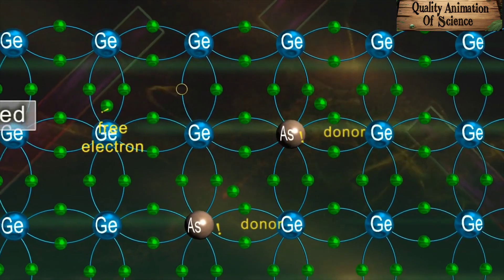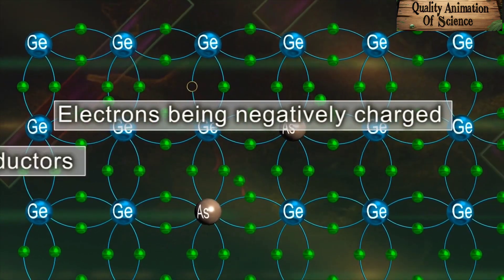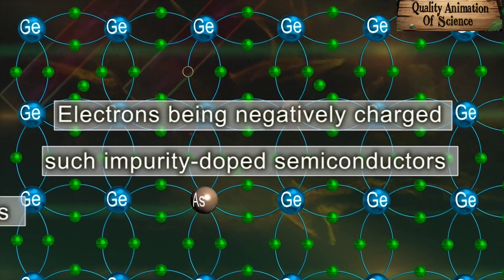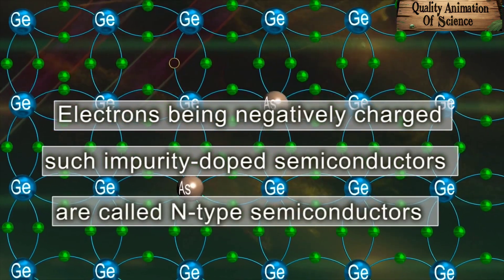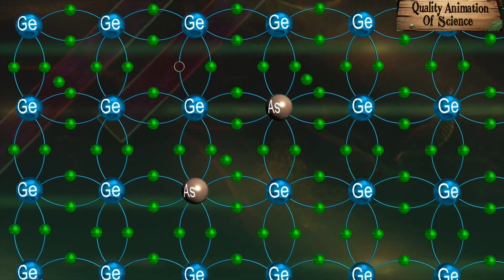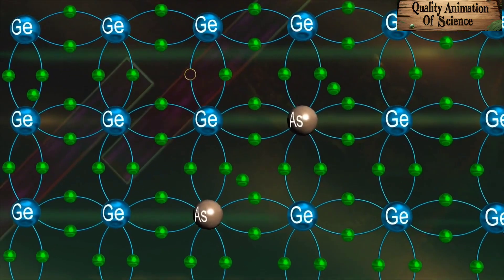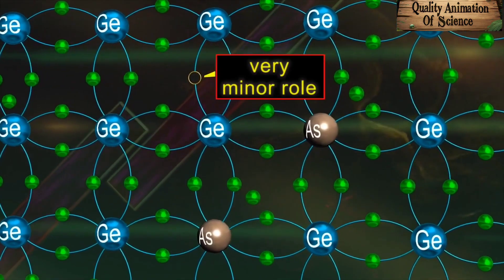The electrons being negatively charged, such impurity-doped semiconductors are called N-type semiconductors. In such semiconductors, the contribution to electrical conduction through holes plays a very minor role.